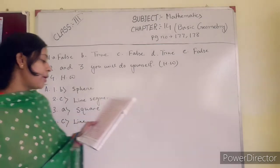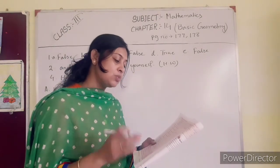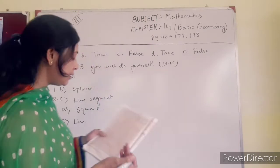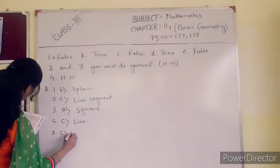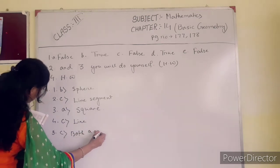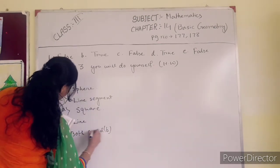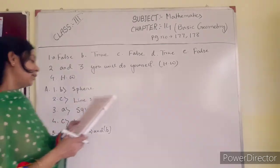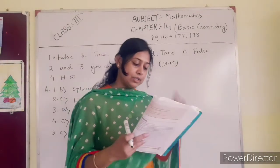Number 5: a tangram has 5 or 7 pieces — both 5 and 7. So the answer is C, both A and B, because a tangram has 5 or 7 pieces.